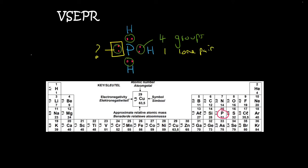So if you have 4 groups with 1 lone pair, if you looked at the previous lesson, we call that trigonal pyramidal. Not trigonal bipyramidal, that's something different. Just trigonal pyramidal.